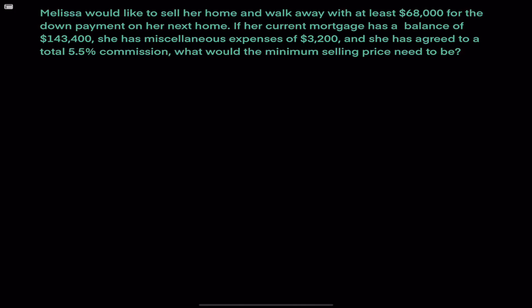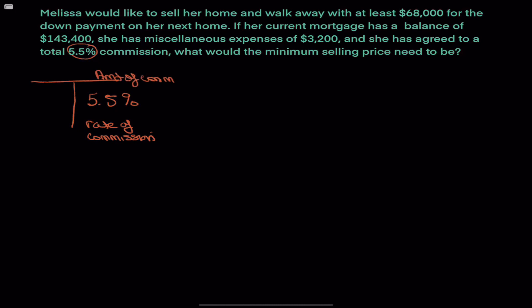For this problem, what we want to do is make a T-bar. The easiest thing to place into a T-bar is the rate. The first rate we come to is 5.5%, which is a rate of commission, and that means up top we're putting the amount of commission. We know that we pay all commissions off of the total sales price.